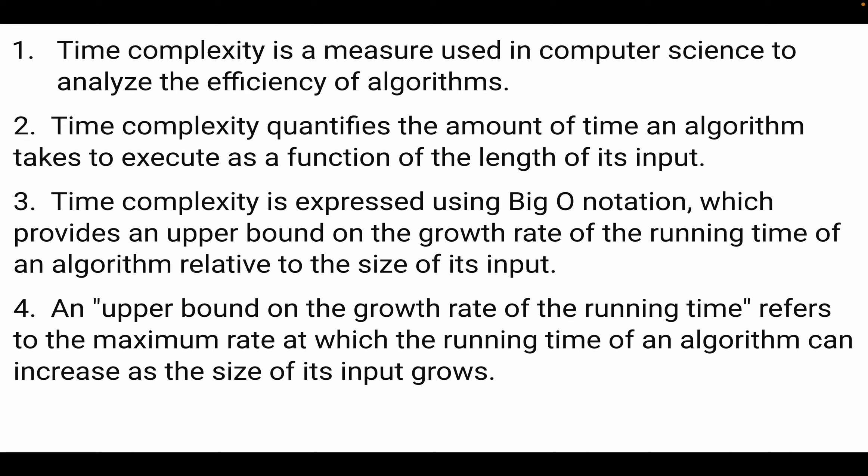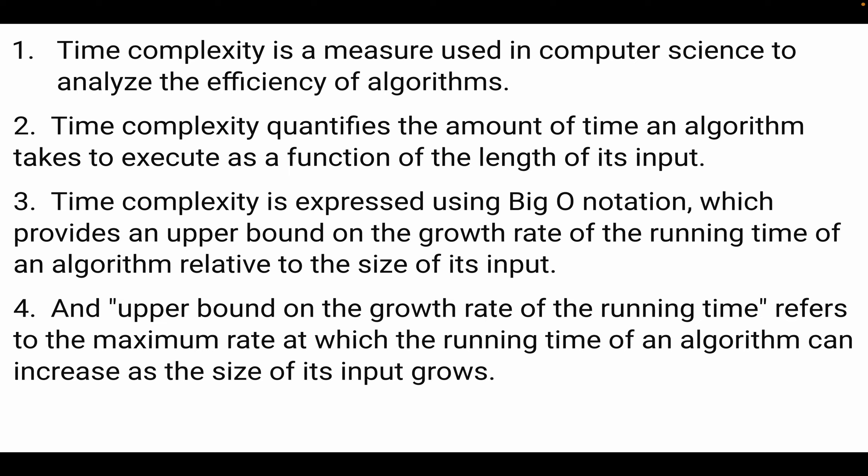Time complexity is expressed using Big O notation, which provides an upper bound on the growth rate of the running time of an algorithm relative to the size of its input. The upper bound on the growth rate of the running time refers to the maximum rate at which the running time of an algorithm can increase as the size of its input grows.